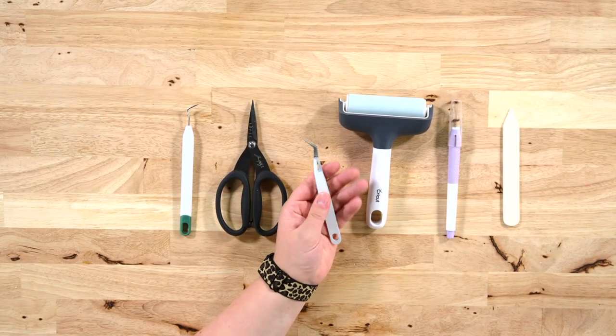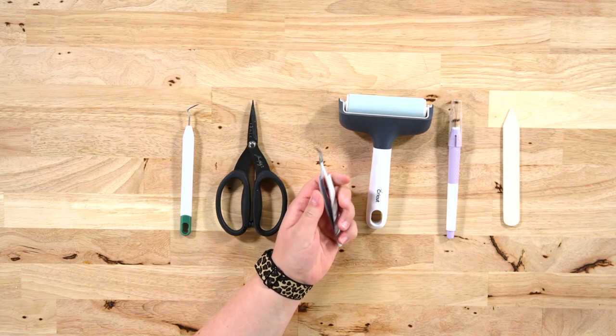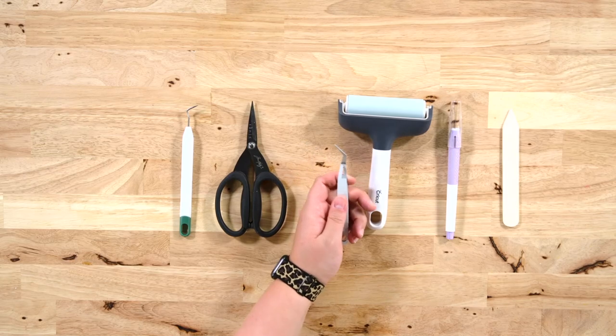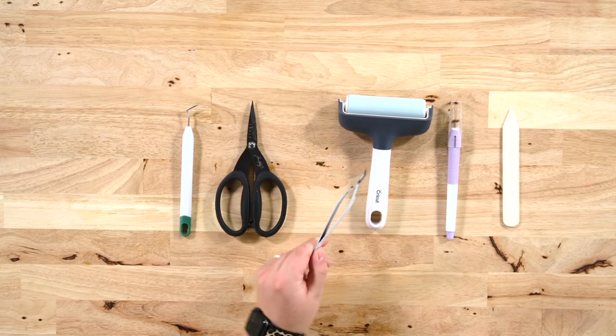Reverse tweezers are things that we use constantly for Cricut crafting, for placing little items into UV resin, for paper crafting, all sorts of things.